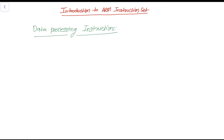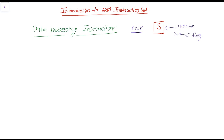Within data processing instructions, the first instruction we are going to discuss is the Move instruction. One important thing to notice is that we will also be using a suffix 'S'. This suffix is used when we want to update the status register. Now let's discuss the Move instruction in detail.